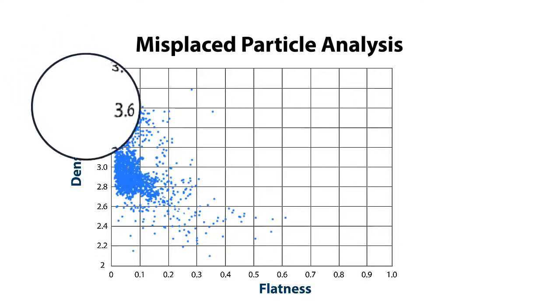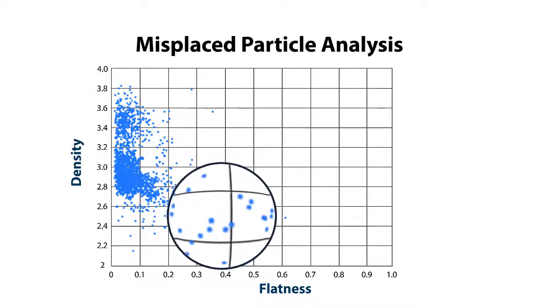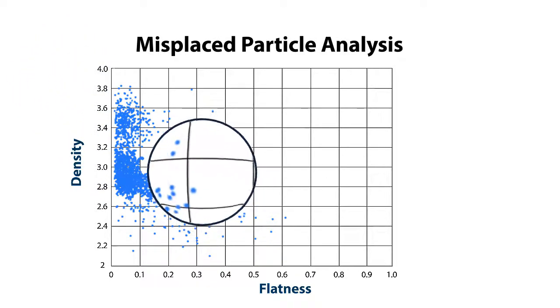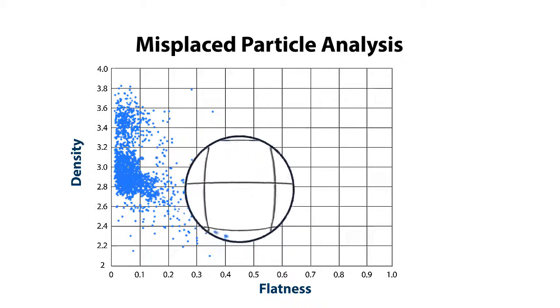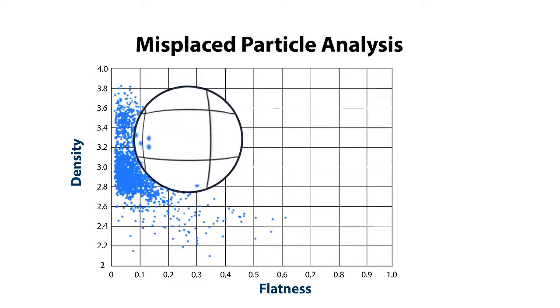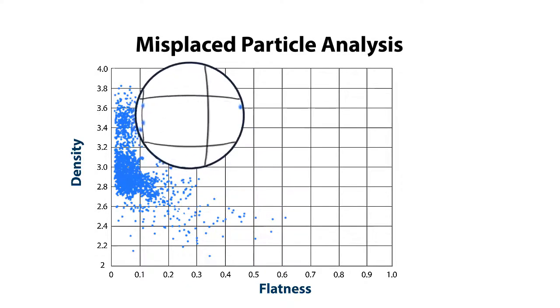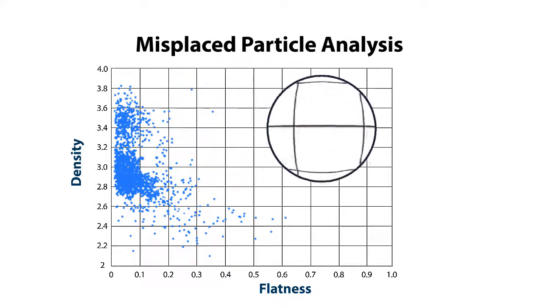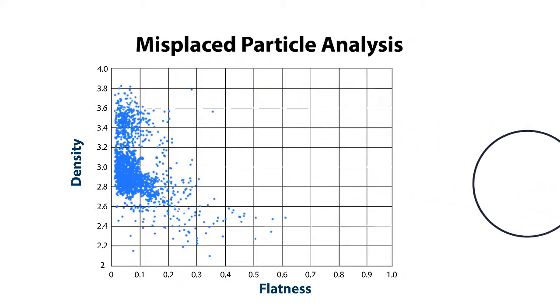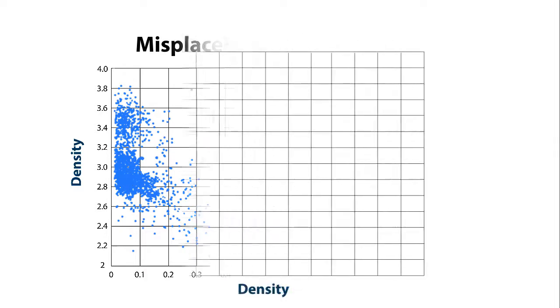During the analysis of a particular sink fraction sample, misplacement of low-density and flat particles were found. The graph clearly indicates that the flatter a particle is, the more likely it will be misplaced to the high-density fraction. It is impossible to reveal this misplacement without access to this type of data.